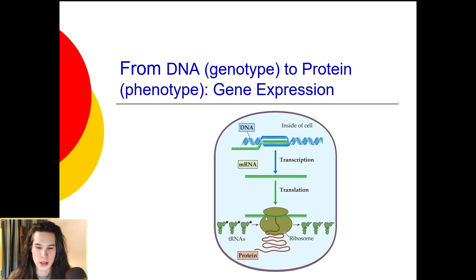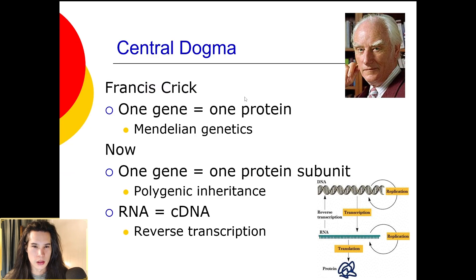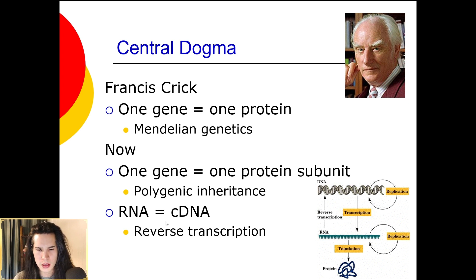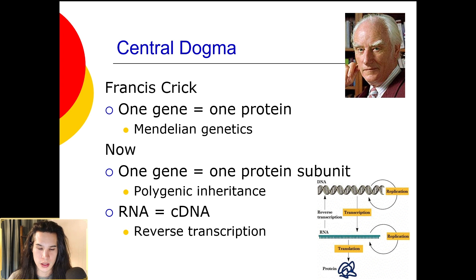The ribosome is going to translate that mRNA into proteins. Originally it was thought that one gene made only one protein, but with recent advances we've discovered that one gene usually codes for a protein subunit. A lot of our proteins in our cells are actually composed of multiple subunits, so each transcript might code for simply a subunit of a larger protein. We've also found that reverse transcription is a thing — that's where you're actually moving from RNA into DNA. This is something we would observe in the HIV virus.